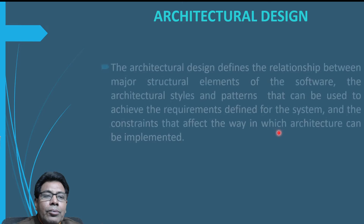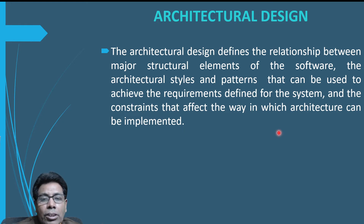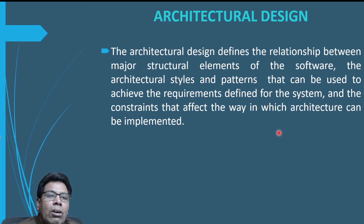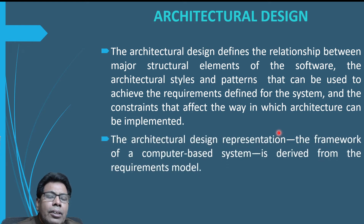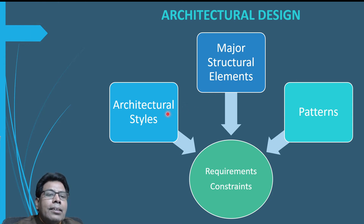Architectural design defines the relationship between the major structural elements of the software — that is, the architectural styles and patterns that can be used to achieve the requirements defined for the system, and the constraints that affect the way in which the architecture can be implemented. The architectural design representation — the framework of the computer-based system — is derived from the requirements model. The major structural elements, architectural styles and patterns together give us the particular requirements and constraints for the system.